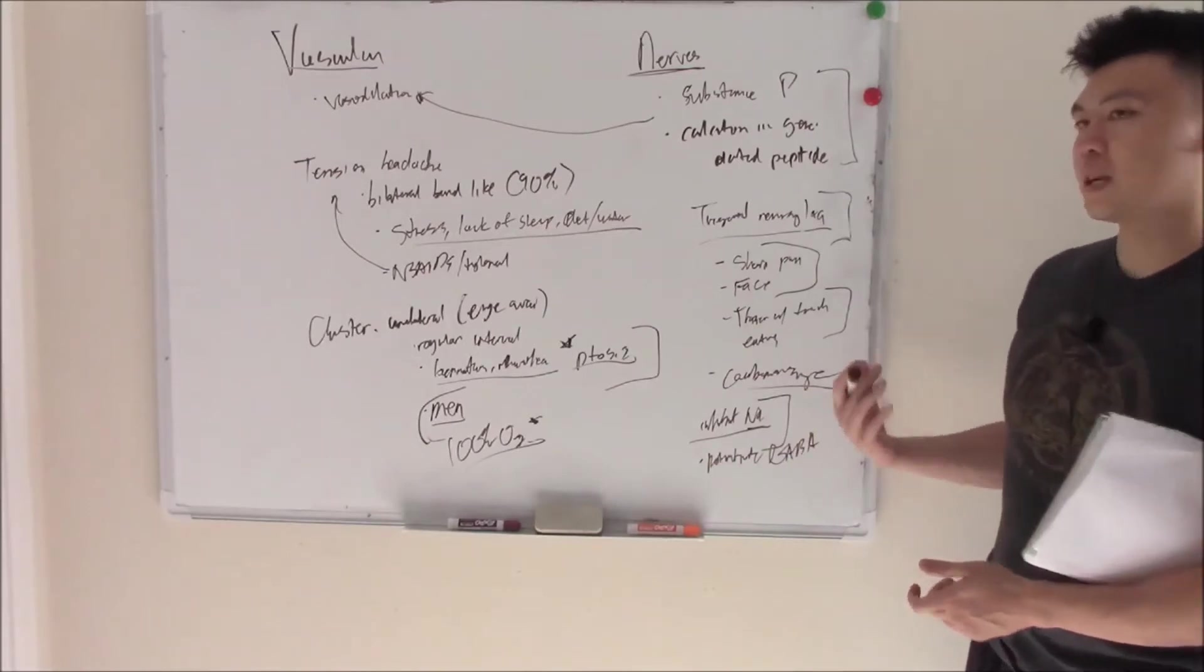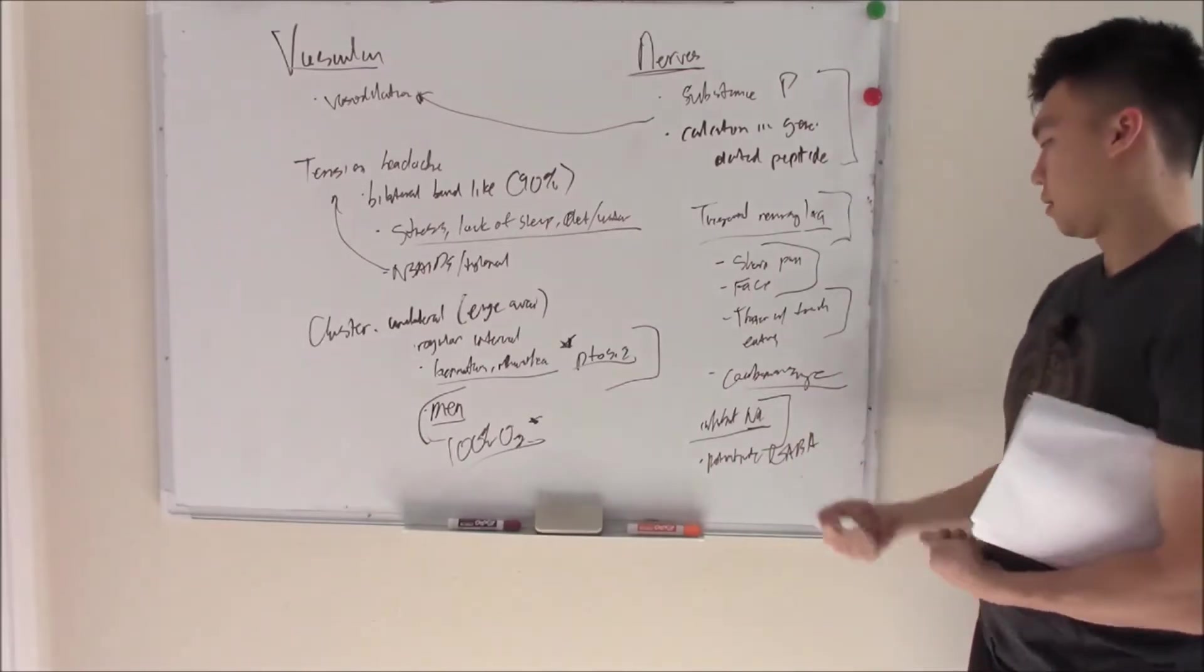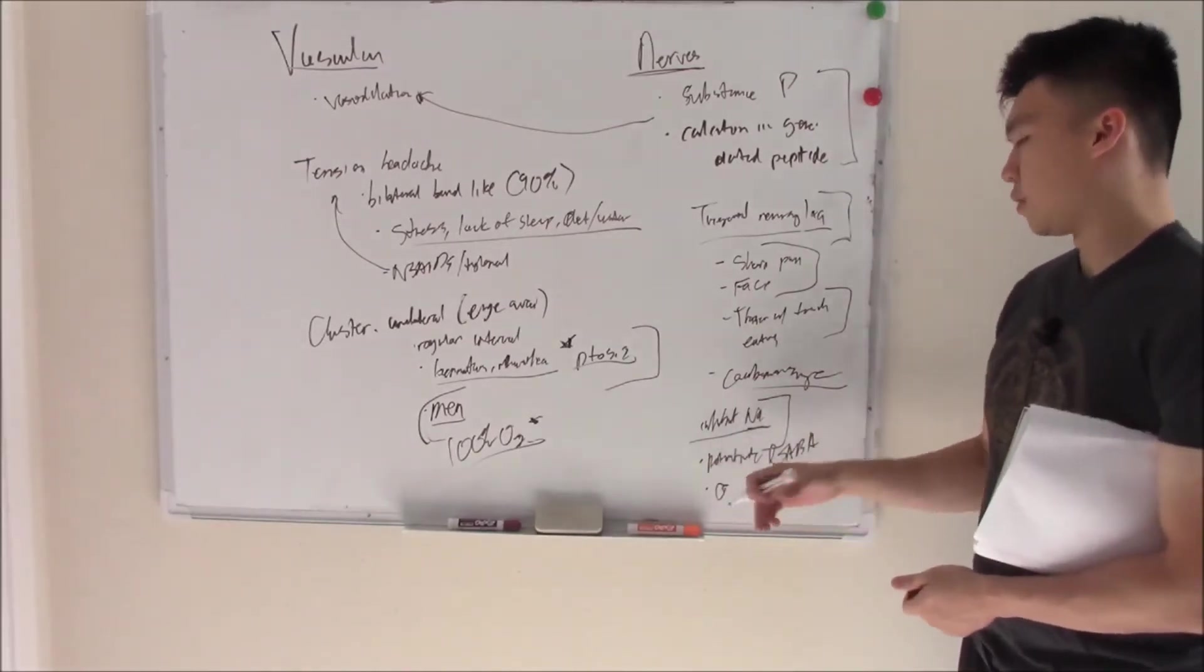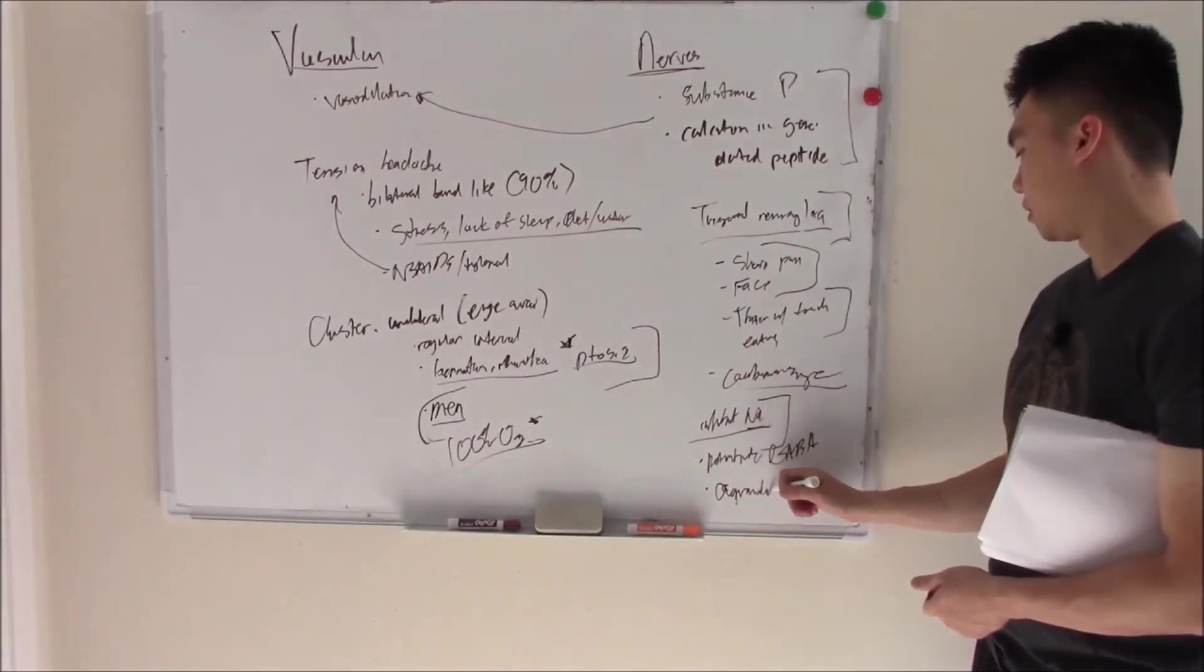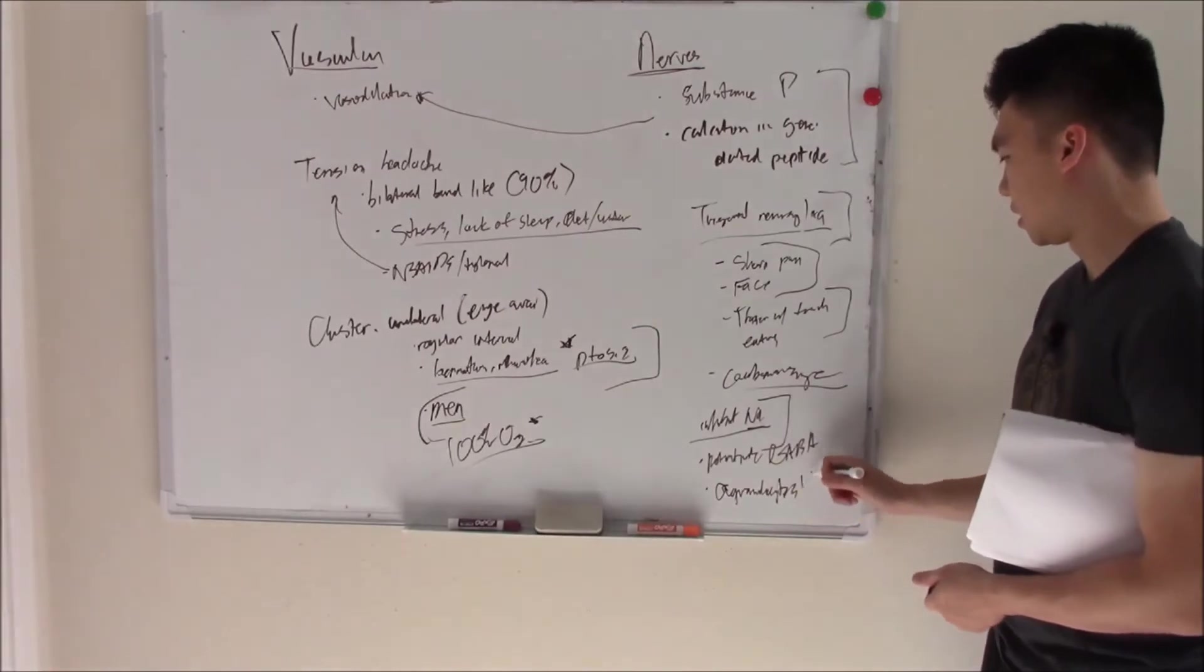So we can give carbamazepine. What's the side effect of carbamazepine? Remember, it's very toxic to your bone marrow. So agranulocytosis.